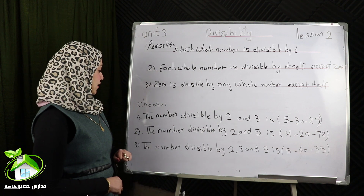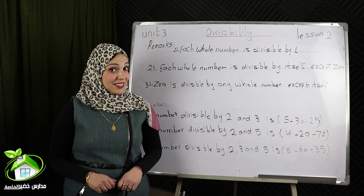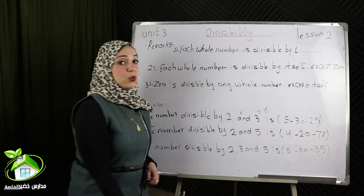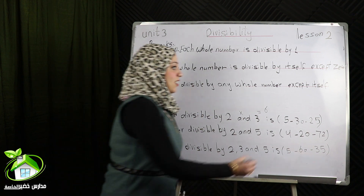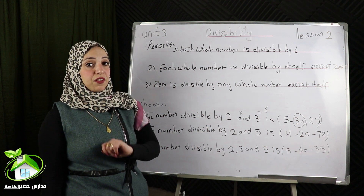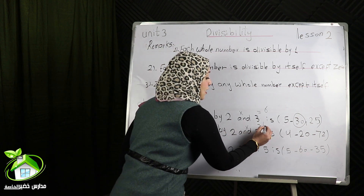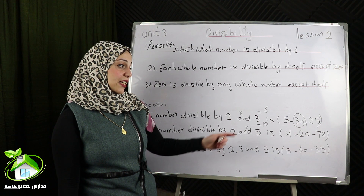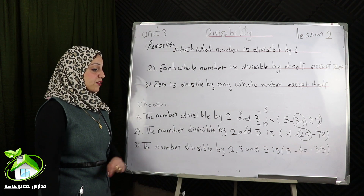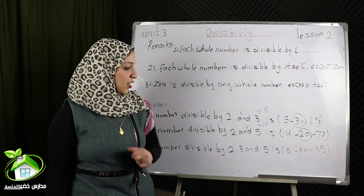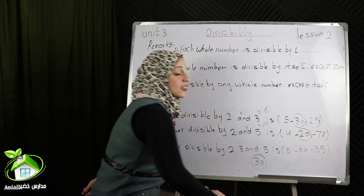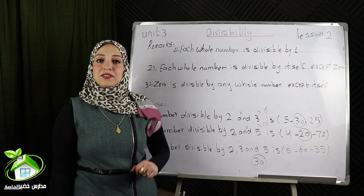Important exercise. Choose the correct answer. The number divisible by 2 and 3: I multiply 2 times 3 equals 6, and I will choose the number divisible by 6, which is 30. The number divisible by 2 and 5: I multiply 2 times 5 equals 10, and I will choose the number divisible by 10, which is 20. The last one: the number divisible by 2, 3, and 5 — 2 times 3 equals 6, and 6 times 5 equals 30. I will choose the number divisible by 30, which is 60.